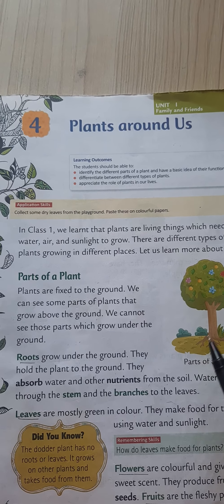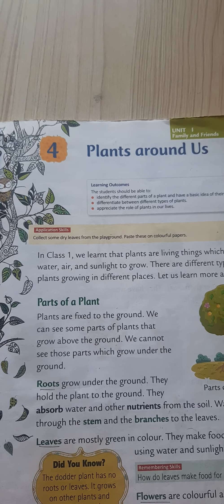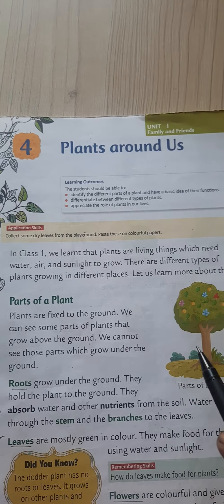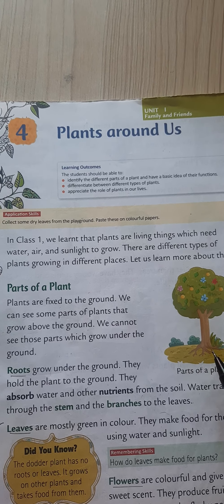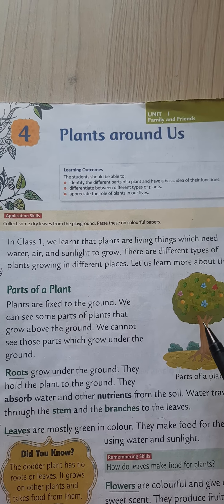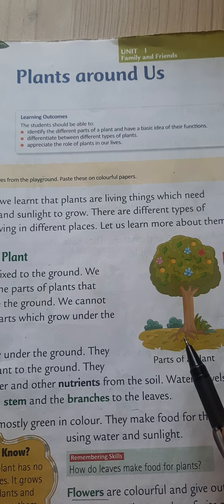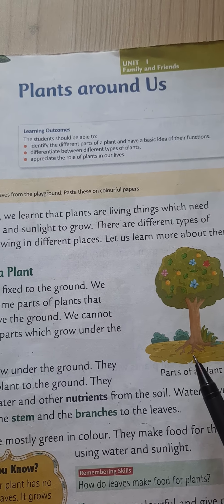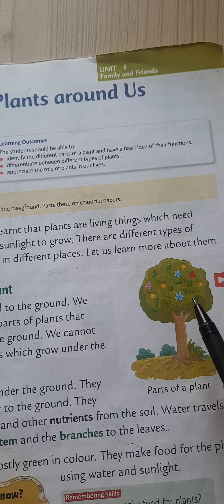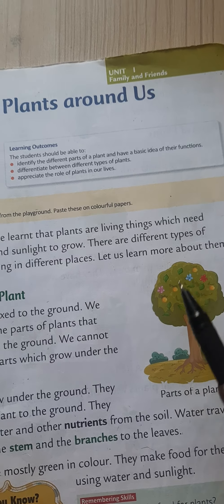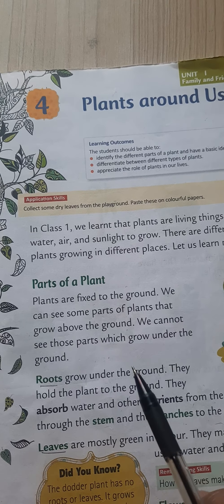Just as our body functions with the help of external and internal organs, the plant also has parts. The parts of a plant are: root, stem, leaves, flowers, and fruits. These are the parts of a plant.